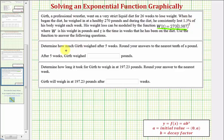The first question asks to determine how much Girth weighed after five weeks, rounded to the nearest tenth of a pound. The second question is determine how long it took for Girth to weigh in at 197.23 pounds, and we're asked to round to the nearest week. So we'll answer both of these questions using the graphing calculator.